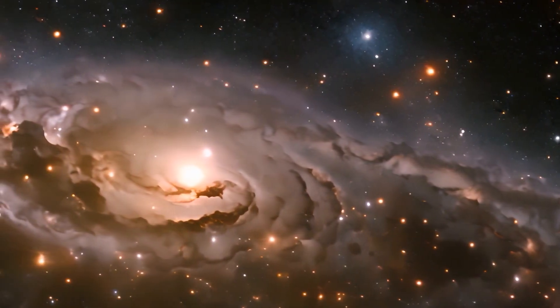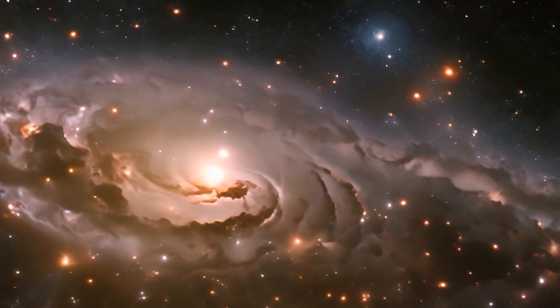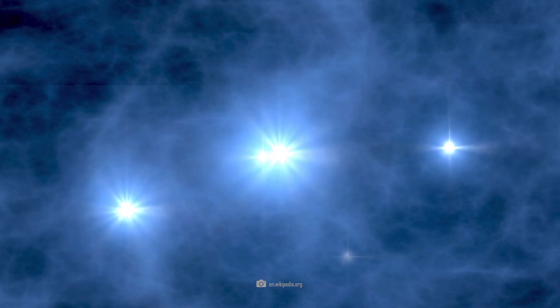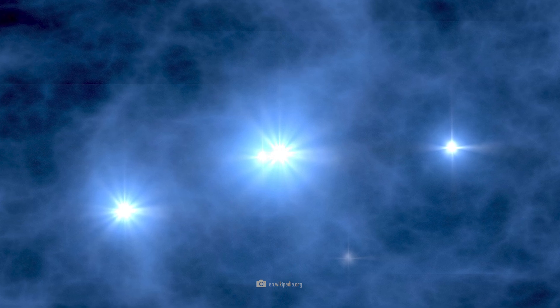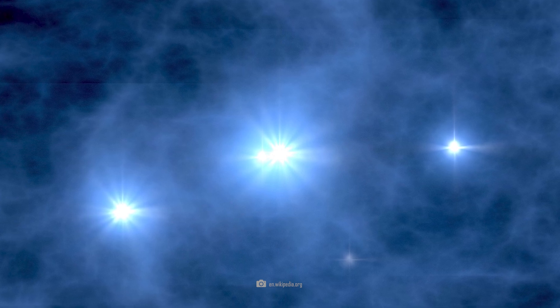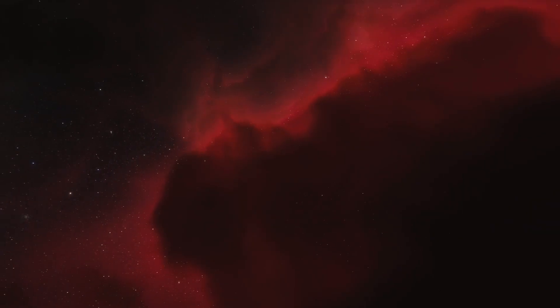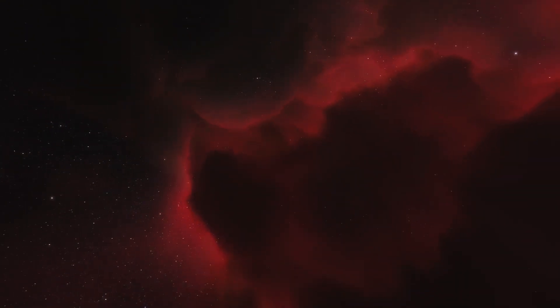The cosmic dawn began when the first stars and galaxies formed. The first stars are often referred to as population 3 stars. They were extremely massive and short-lived. They produced large amounts of ultraviolet light, which was eventually able to ionize the neutral hydrogen.